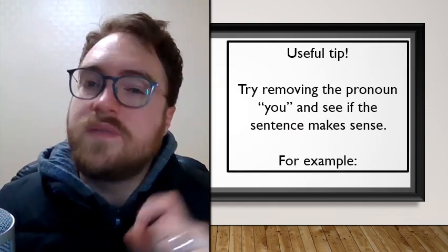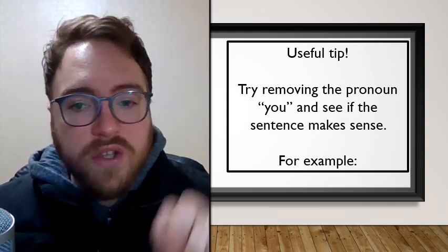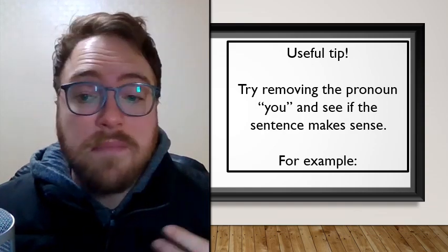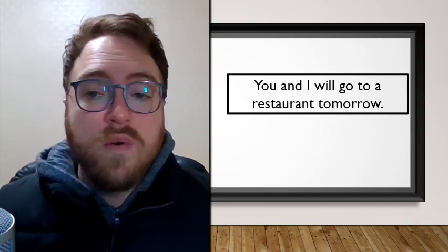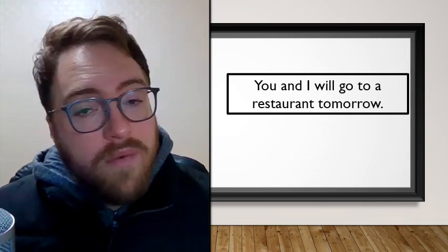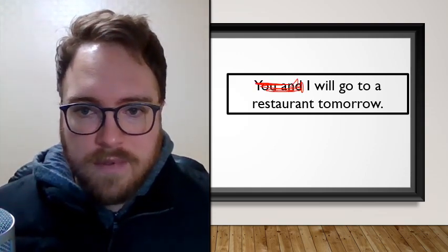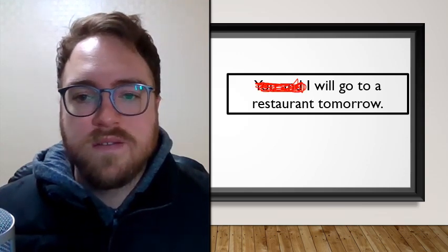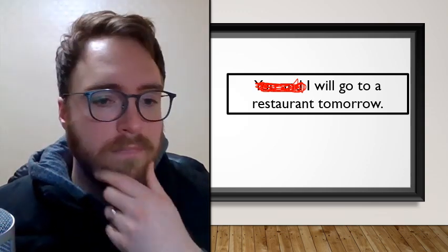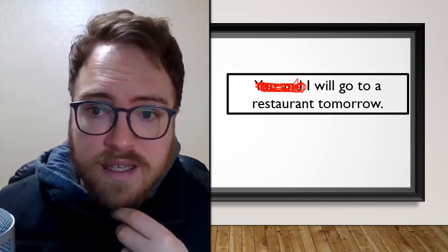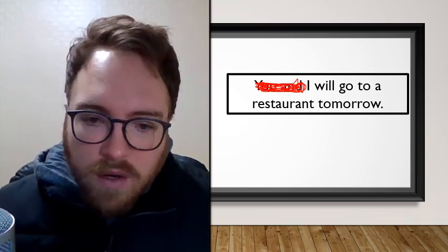Here's a useful tip: try removing 'you and' and see if the sentence still makes sense. For example, take 'You and I will go to a restaurant tomorrow' — remove 'you and' and you're left with 'I will go to a restaurant tomorrow.' Does that make sense? Yes. Is that correct? Yes. So 'you and I' is correct.